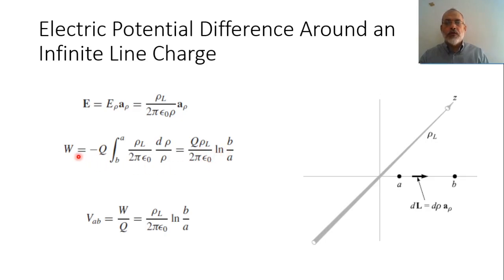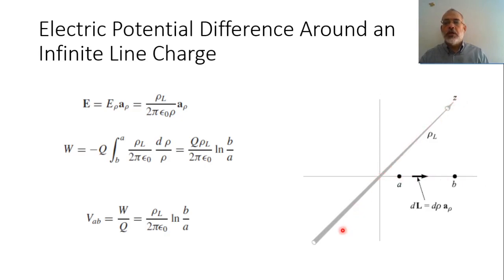If we divide the work by the value of the charge, we obtain the potential difference. The potential difference between points A and B on the radial direction from an infinite line charge is rho_l over (2π ε₀) multiplied by ln(r_B over r_A).